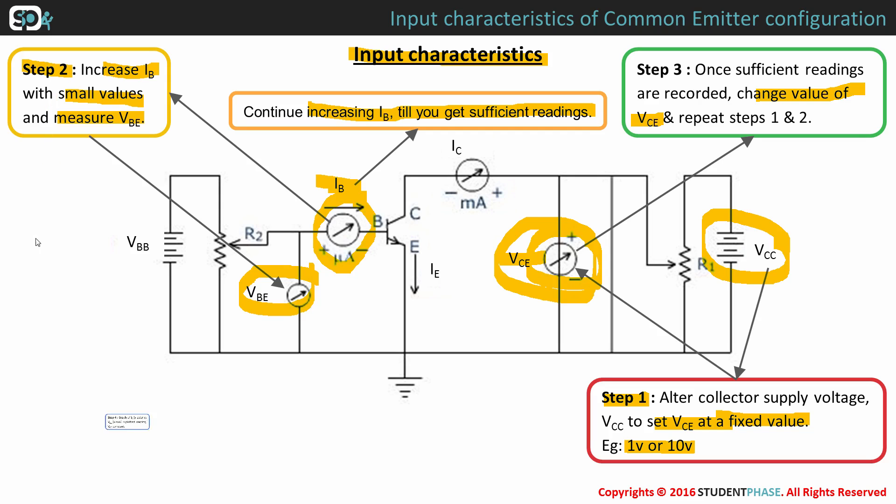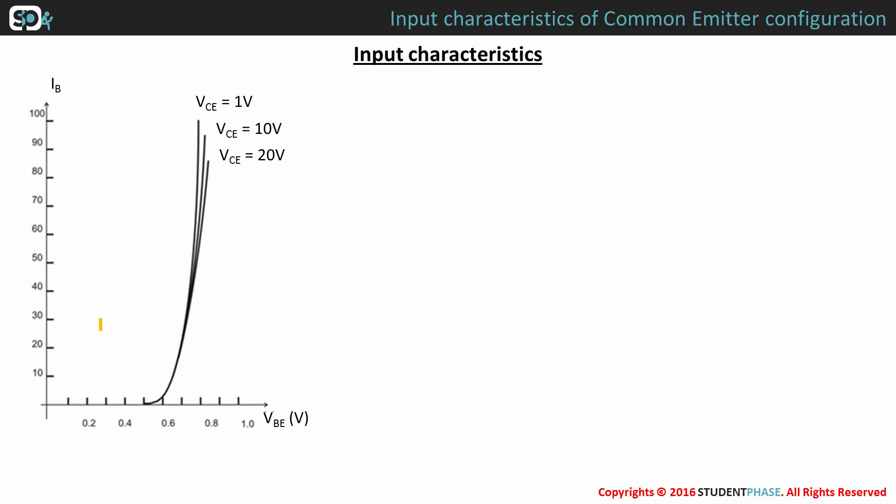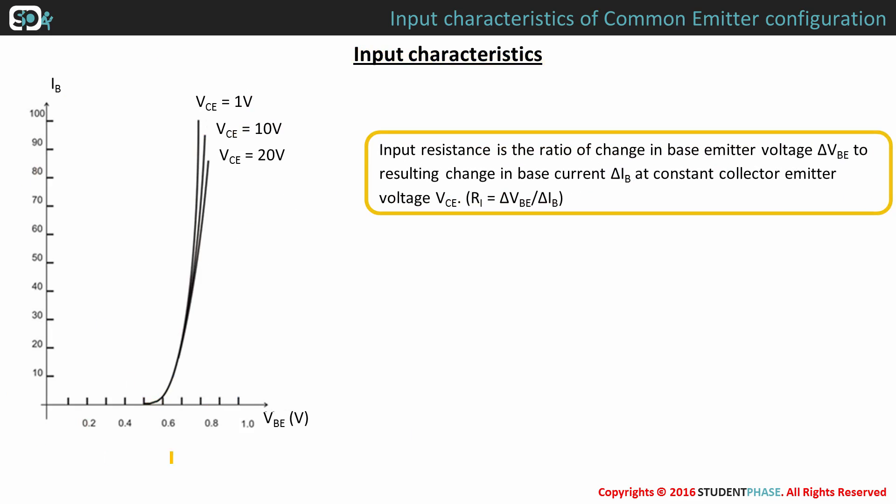Plot a graph of IB versus VBE, keeping VCE constant. The plotted graph may look something like this. Based on the observations, we can arrive at certain input characteristics.